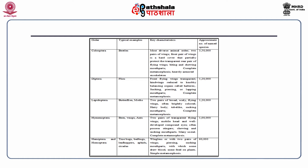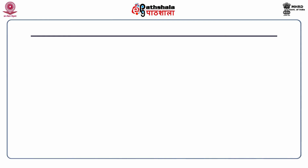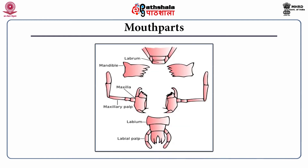Order Hymenoptera: two pairs of transparent flying wings, mobile head and well-developed compound eyes, often possess stingers, chewing and sucking mouthparts. Many are social in this group, with complete metamorphosis. Order Hemiptera and Homoptera: these insects are wingless or with two pairs of wings. They have piercing and sucking mouthparts with which some draw blood and some feed on plants. The metamorphosis is simple in this case.